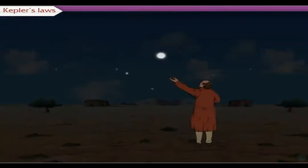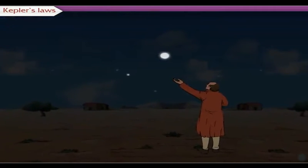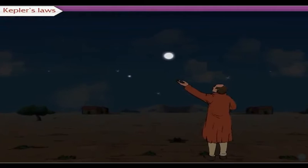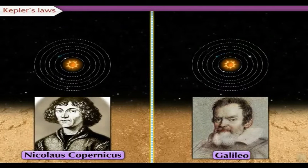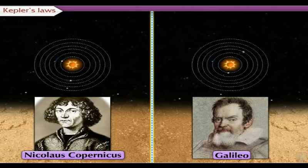Before Galileo, all observations about the positions of the planets were made with naked eyes. By the 16th century, a lot of data was available about planetary positions and motion.